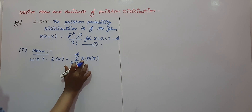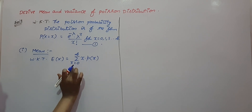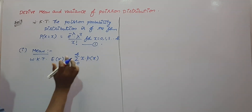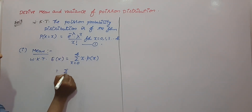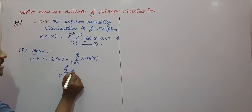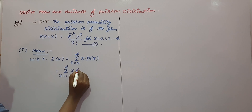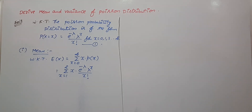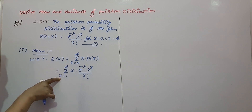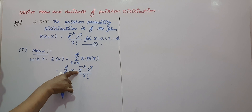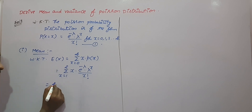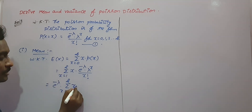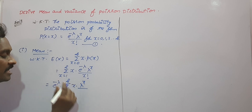Expanding this series by putting x = 0, the first term is 0·P(0), the second term is 1·P(1), then 2·P(2), and so on. Since the first term is 0, we can drop it and start the series from x = 1 to infinity. Substituting the Poisson probability P(x) = e^(−λ)·λ^x / x!, we note that e^(−λ) is constant with respect to the summation, so we take it outside.